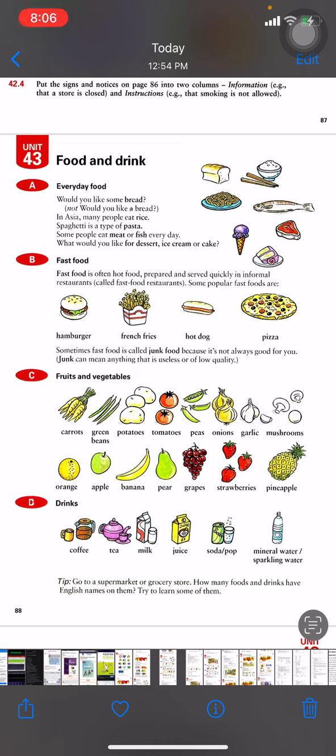Letter B is fast food. Fast food is often hot food prepared and served quickly in informal restaurants called fast food restaurants. Some popular fast foods are hamburger, french fries, hot dog, and pizza. You can go to buy fast food.